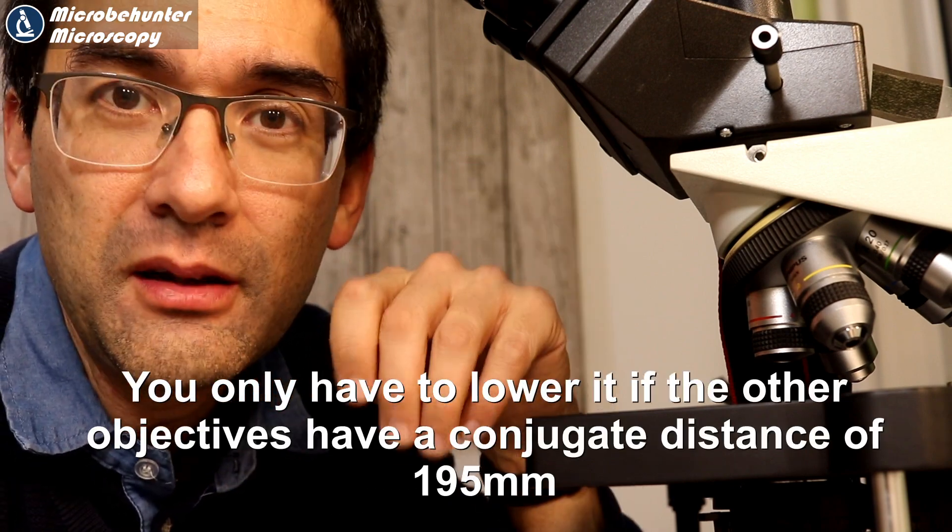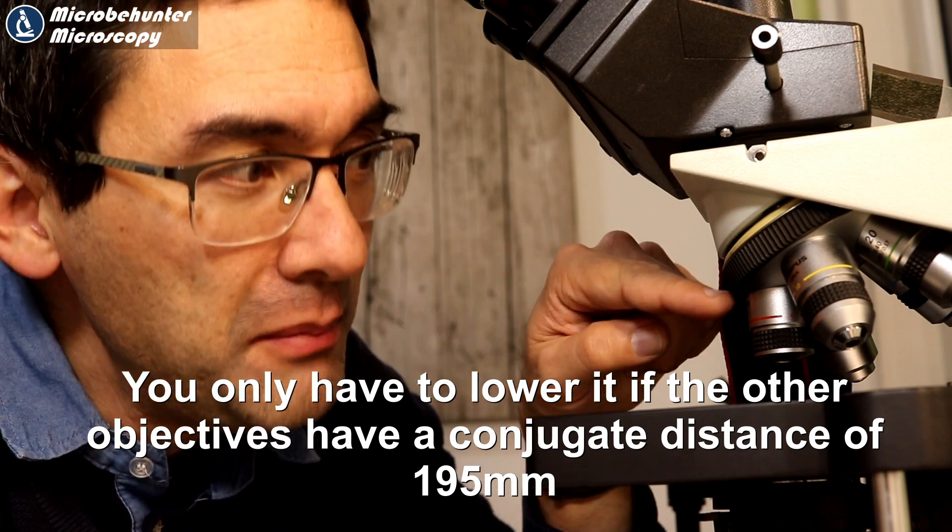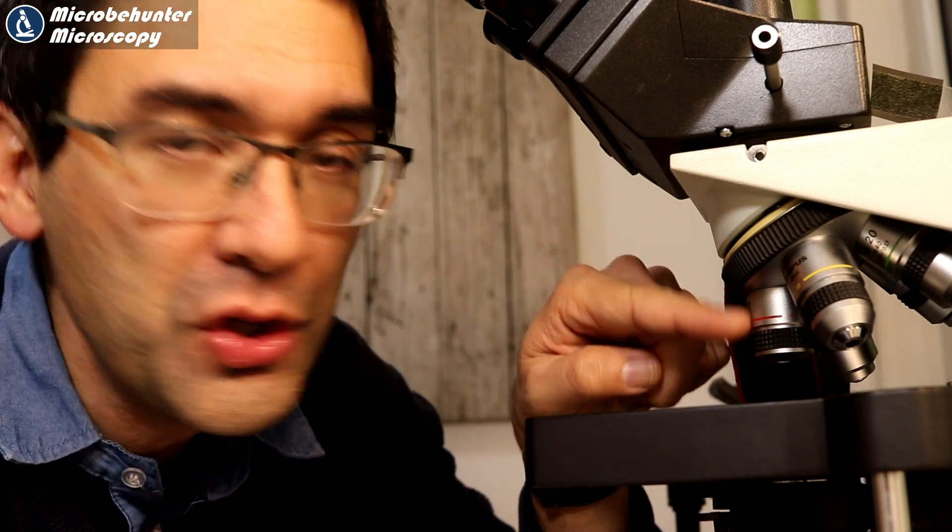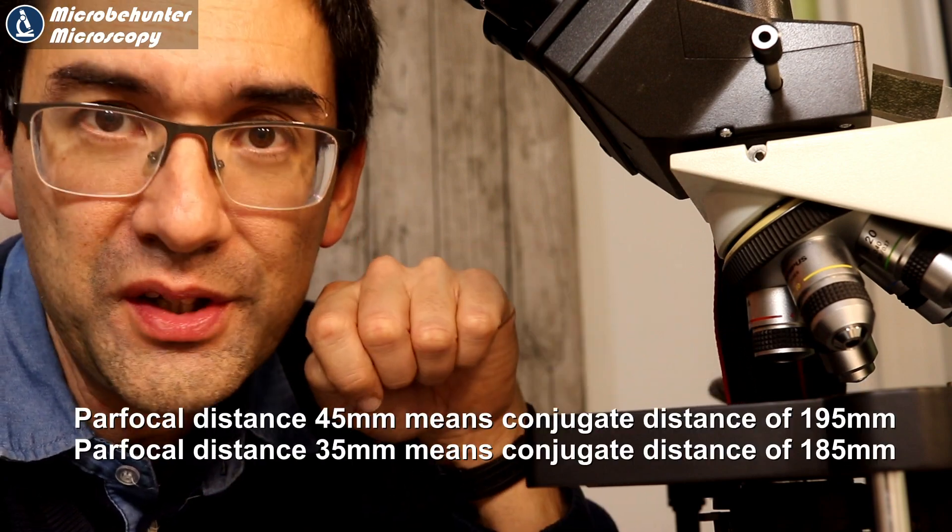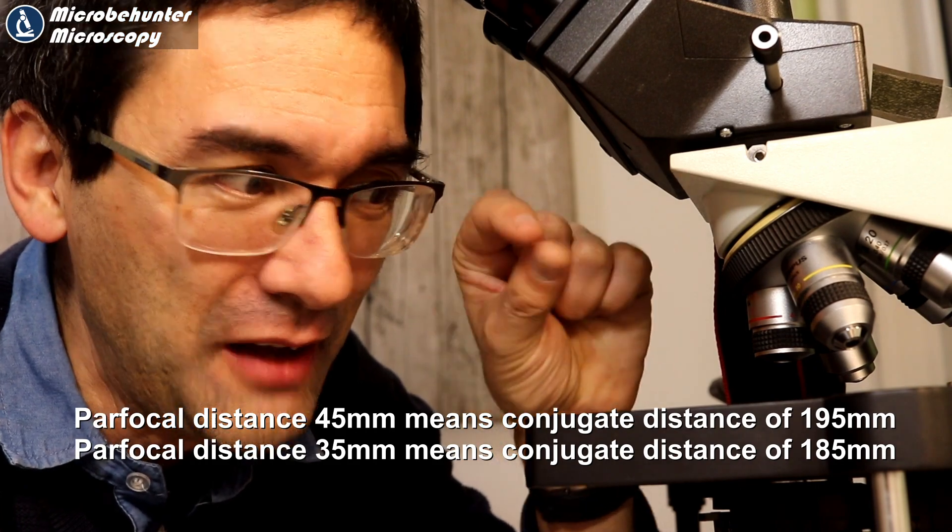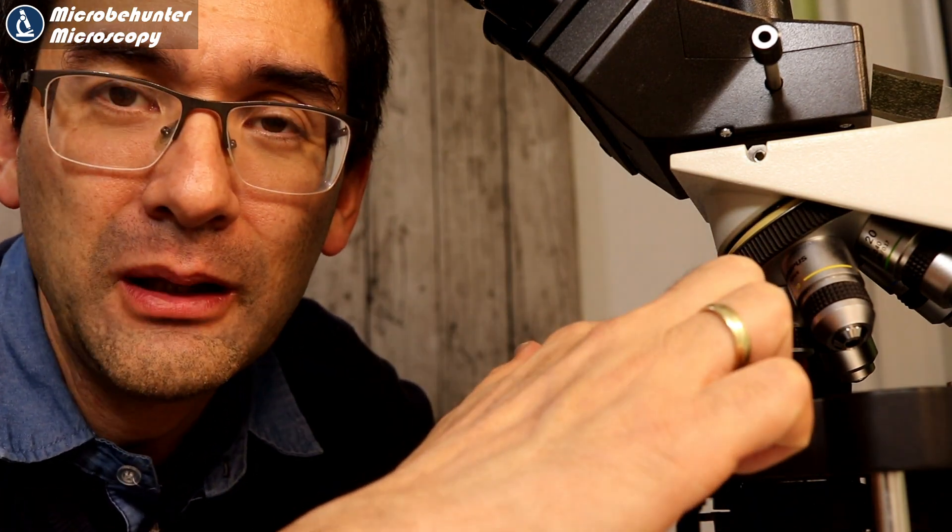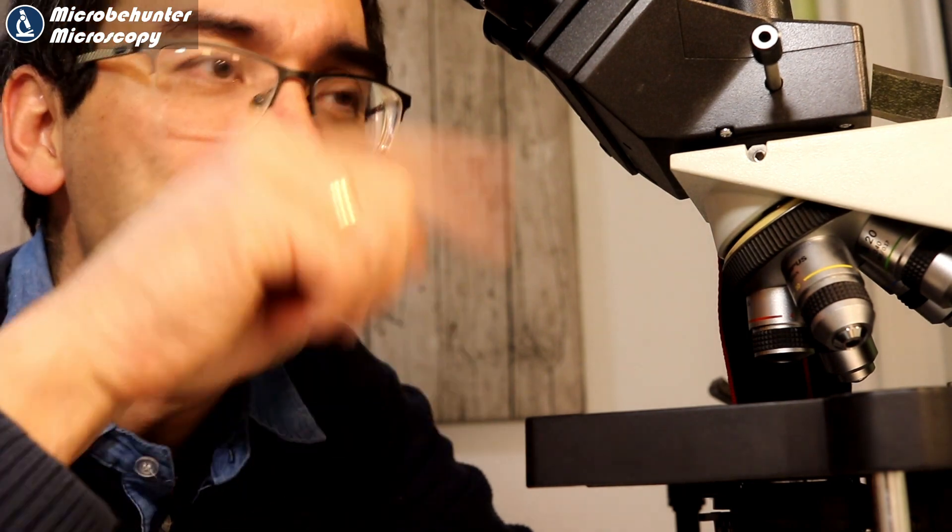That is basically the short explanation, but for the measurement of this distance - the 45 millimeters in my case - you only measure when the image is in focus. Don't forget to put in a slide because this is about one or one and a half millimeters thick. So I have 45 millimeters, which means 45 plus 160 minus 10, which is 195.